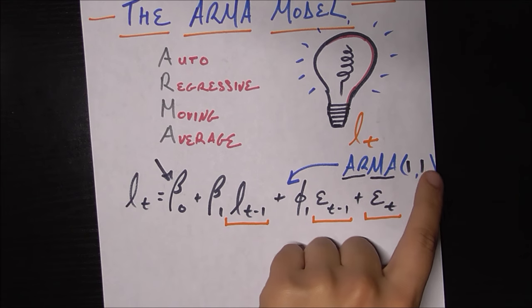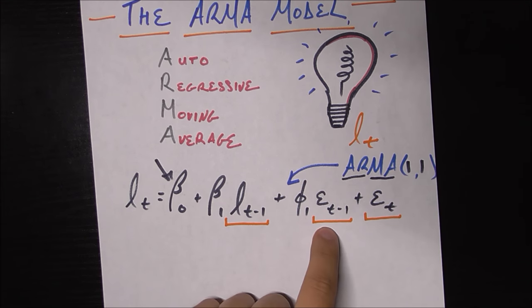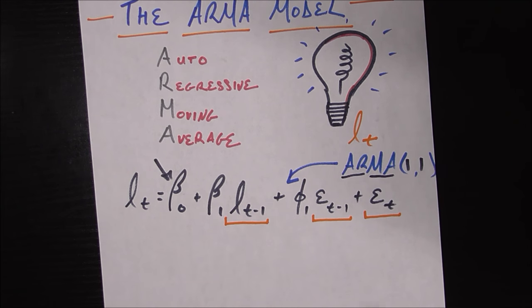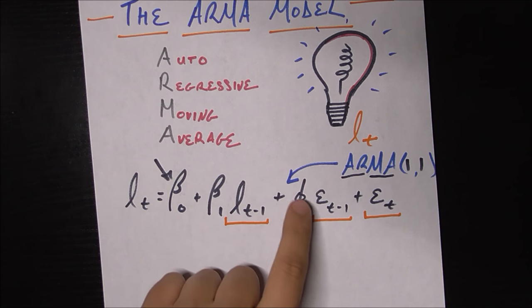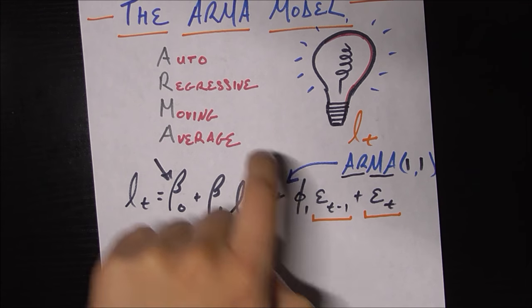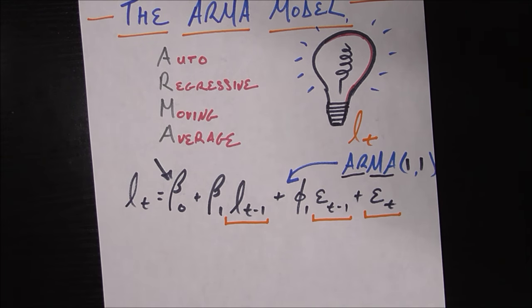But we also have this MA(1) bit, which says that it's not only a function of the number of light bulbs I had to create last month, it's also a function of this coefficient phi sub 1, and epsilon sub T minus 1, which is my error from the previous time period, from last month.